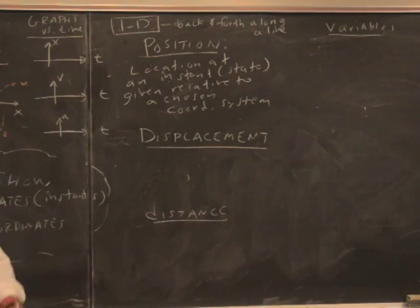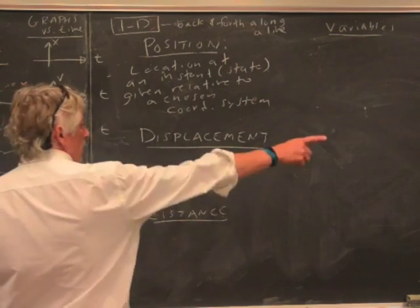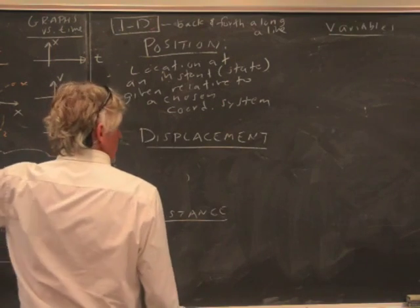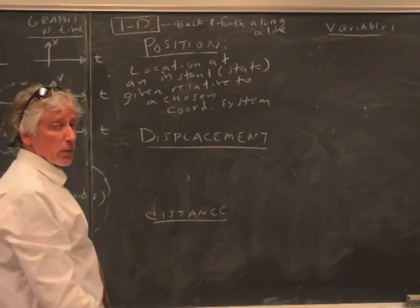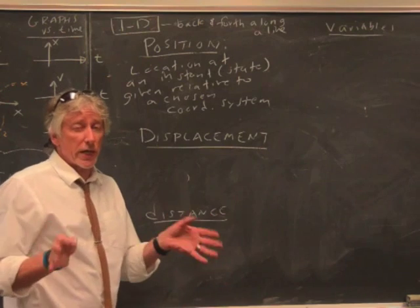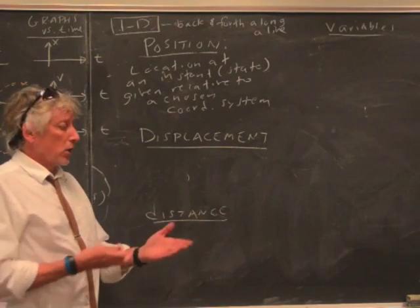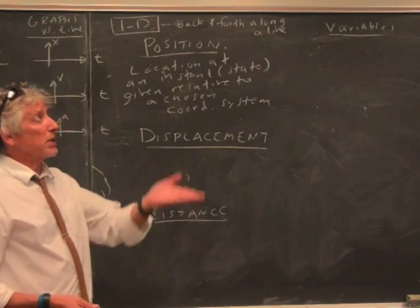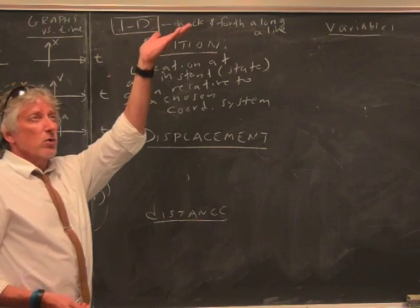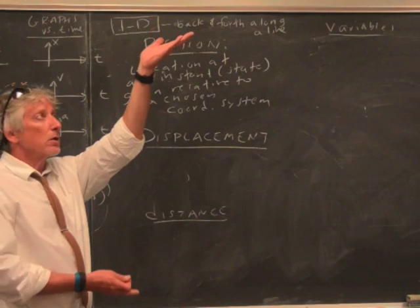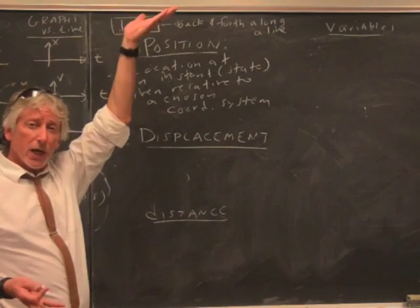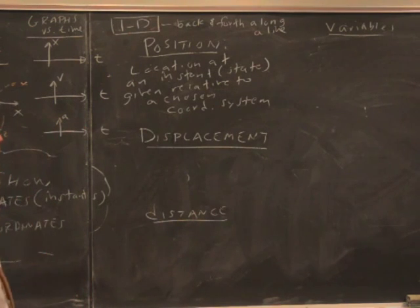This is the location at an instant or state given relative to a chosen coordinate system. And we need to break free. You might say to the right's positive, because you see it a lot in math, but it doesn't matter. To the left can be positive. Up can be positive. Down can be positive. Just as long as you say what it is, and you're consistent, then you can look at your result and you'll know.